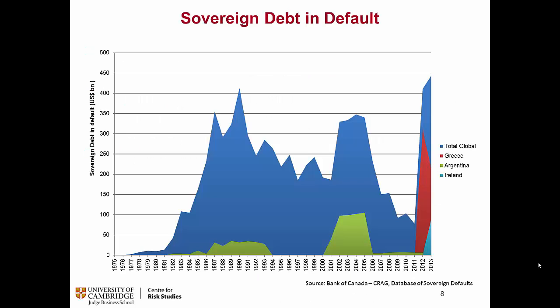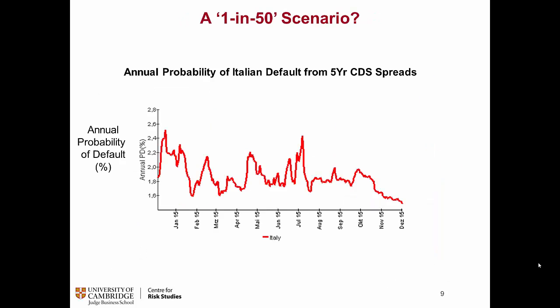This shows the amount of sovereign debt in default as a share of total global value, which goes around 400 billion. Taking two examples — Greece and Argentina — during two crises, a large amount of sovereign debt went into default in Argentina, as well as in the recent crisis in Greece. Just to give a flavour of the probability of such events, we show a one-in-five-year and one-in-50-year scenario using the five-year CDS spread to estimate that probability.